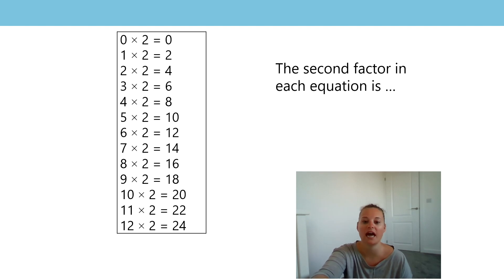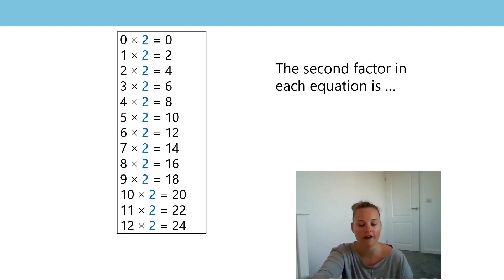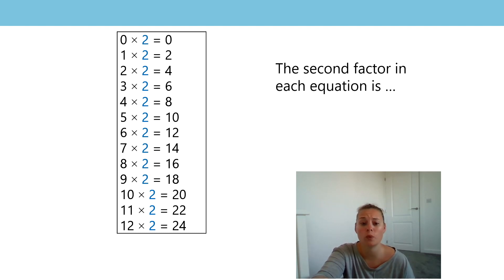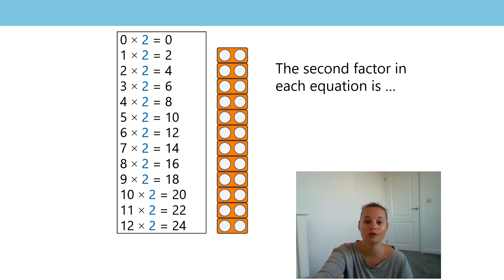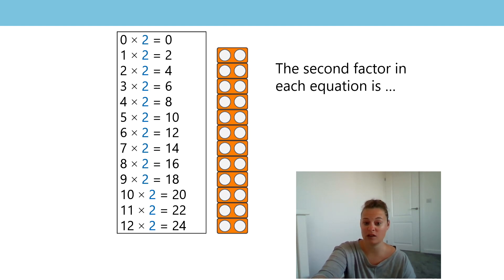The second thing I noticed was about the second factor. As you go down the list, the second factor is always two. What does the two represent? We are counting in twos — this is our two times tables chart. Each group is a group of two. They are all twos, just like our shoes — it rhymes! They are all twos just like our shoes. Maybe you could remember that little rhyme and jot it down next to your ratio chart. The second factor in each equation is two.